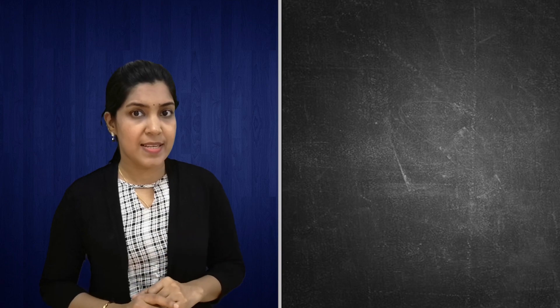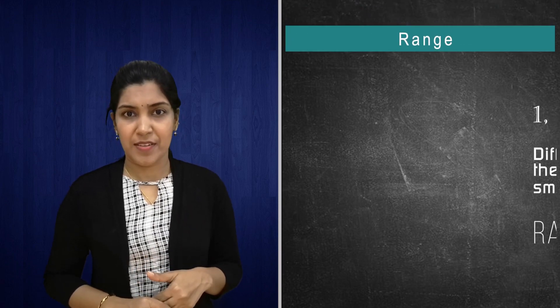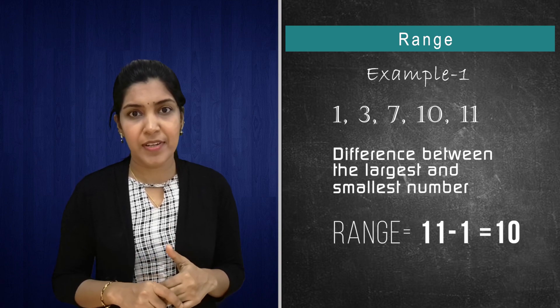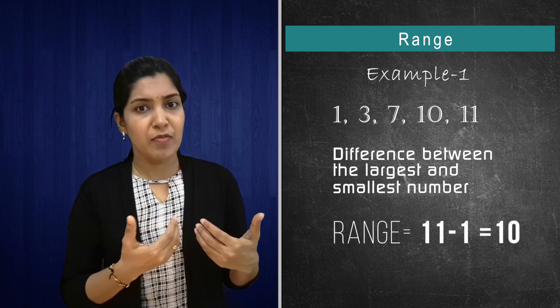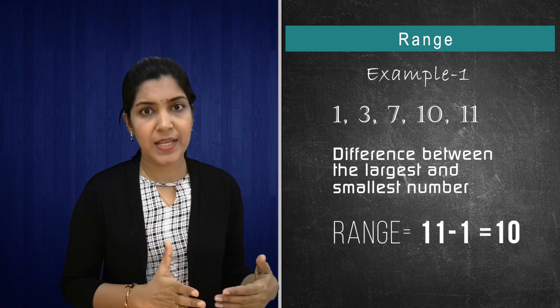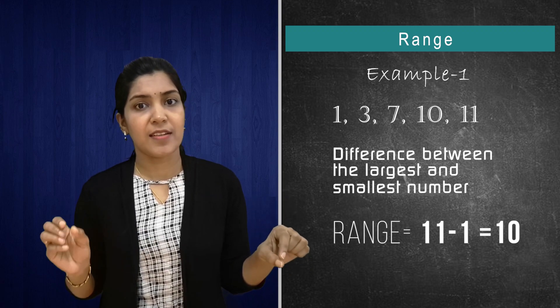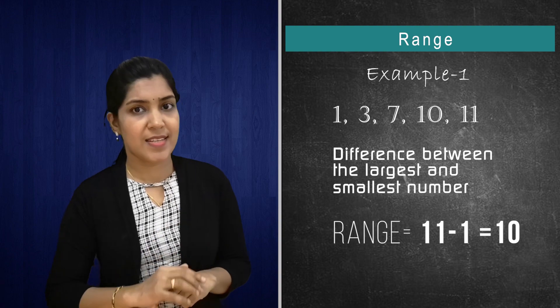Then one more thing is there. Last one. Range. Range means you have to take the difference of the largest and the smallest number. If a given set of data, you have to arrange the numbers from small to big. Then you have to take the largest and the smallest number. Then you have to find the difference. That is the range of the given set of data.